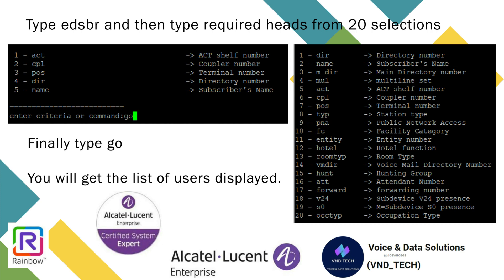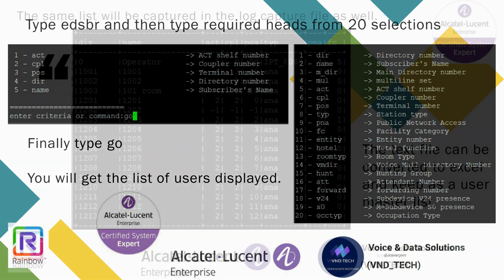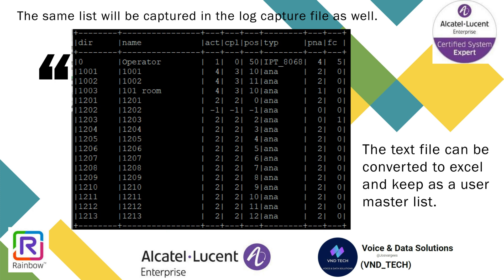Once you finish the selection, type go and press enter. You can see the list printed on the PuTTY window — the output will be seen like this. Now, as you enabled the capture before you opened PuTTY, the same list will be saved as a .txt file.